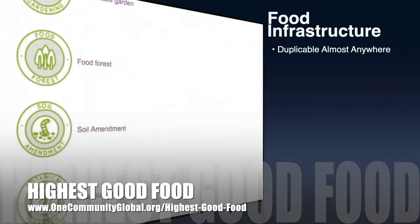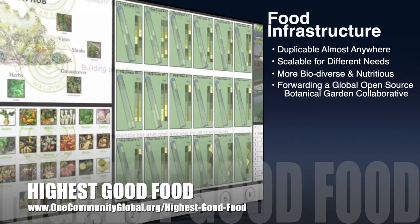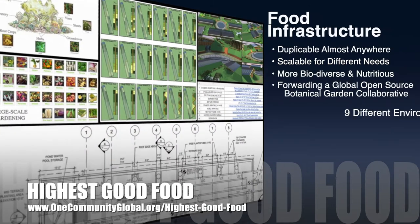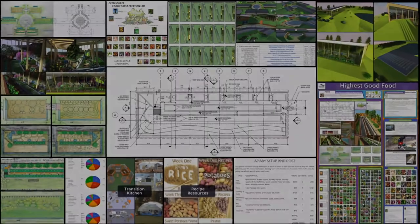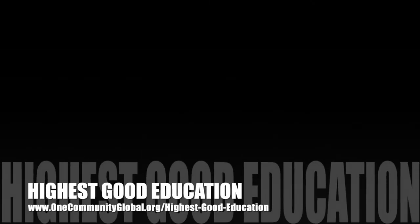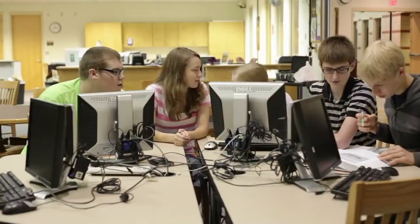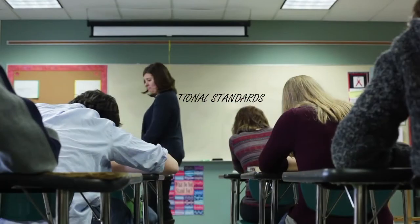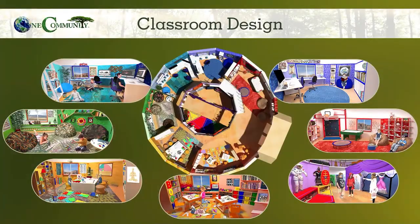One Community's approach to highest good food is duplicable almost anywhere, scalable for different needs, more biodiverse and nutritious, part of forwarding a global open source botanical garden collaborative, and includes nine different free shared and duplicable growing environments. The next component is highest good education — this component is complete and pretty much ready to launch once we're on the property. One Community's approach to highest good education is designed for all age groups, adaptable to any schooling environment, inspiring and fun for all participants, and includes national standards, all national subjects, lesson plans, teaching strategies, learning strategies and tools, classroom design, and more.